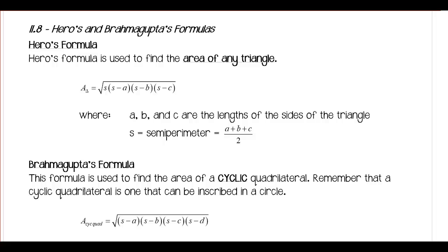This is Mr. Martin. These are the video notes for Geometry Honors, section 11.8. We're going to be looking at two formulas for finding areas. One is for a triangle — it's called Heron's Formula. And the other is for a cyclic quadrilateral — it's called Brahmagupta's Formula.